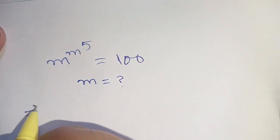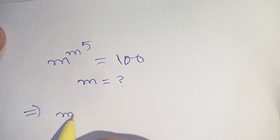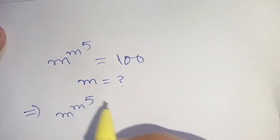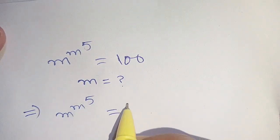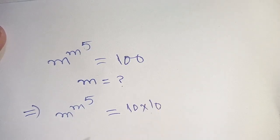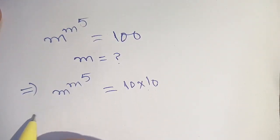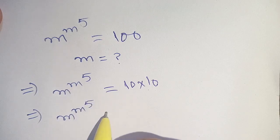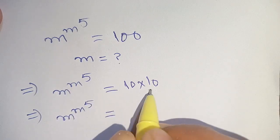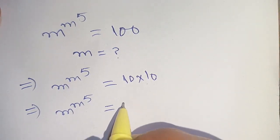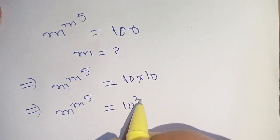We can write m raised to the power m raised to the power 5 is equal to 100 as 10 times 10, which can be written as 10 raised to the power 2.